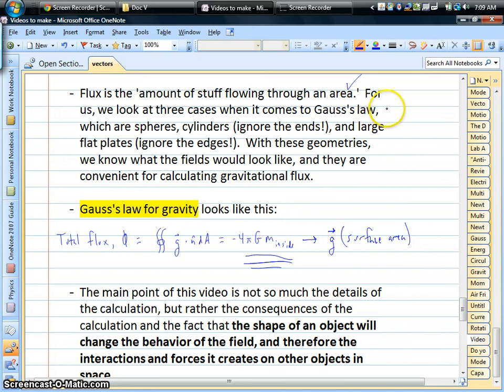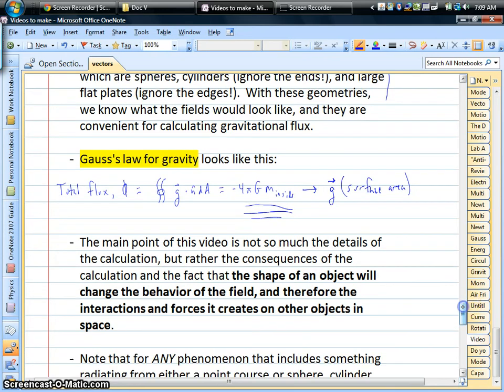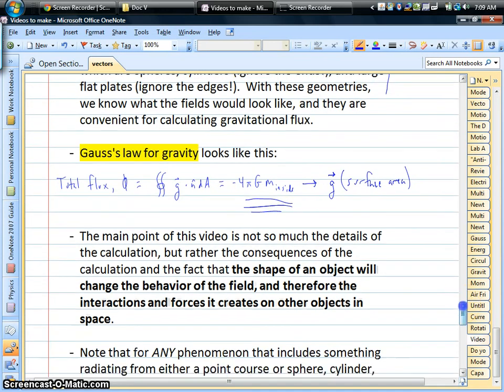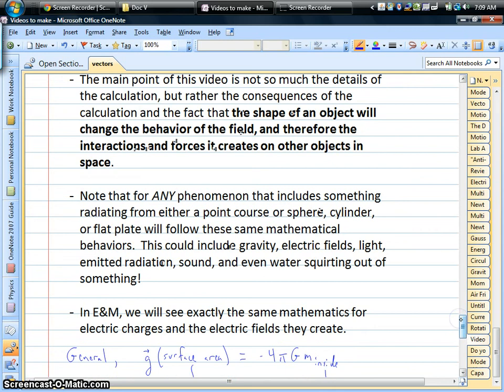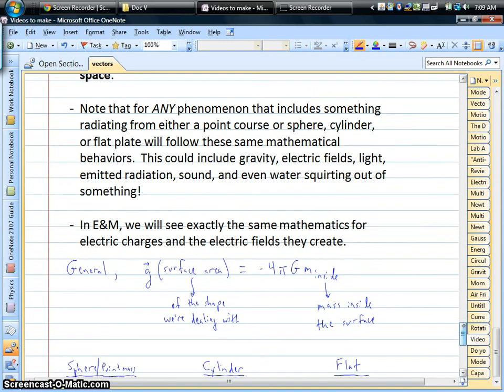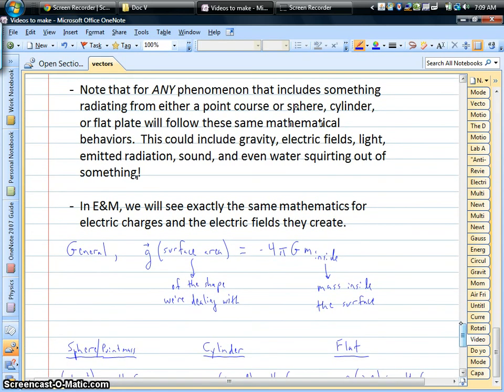With these three shapes that we're talking about here, we know how to find the surface area. So, these are convenient shapes for us to look at. I don't want you to focus on the math. I just want you to focus really on the results we're going to get. And again, in electricity and magnetism in the course, that's when we'll really hit Gauss's Law in a much more detailed way. But the general picture that we're looking at, the gravitational field times surface area on the left-hand side, and we've got constants and the mass inside whatever surface area we're talking about on the right-hand side.